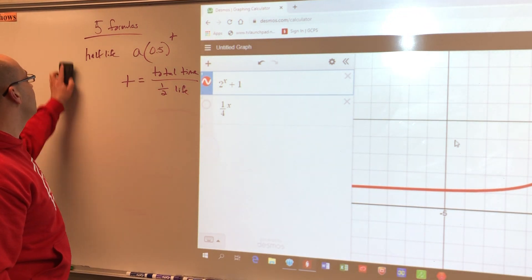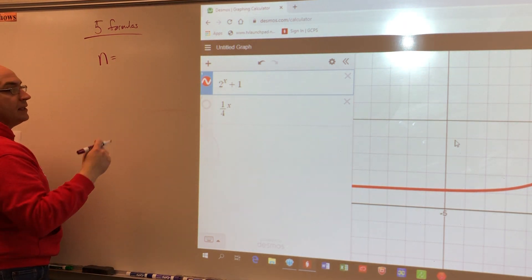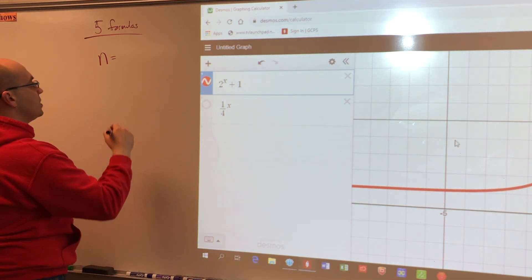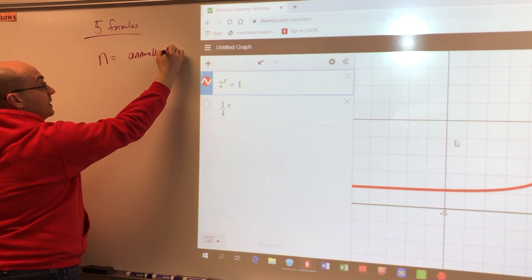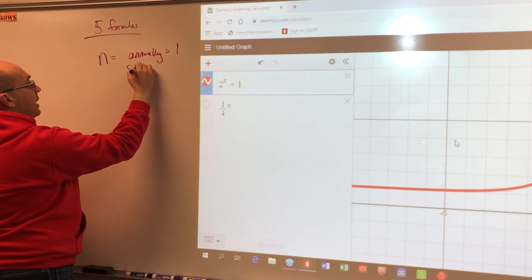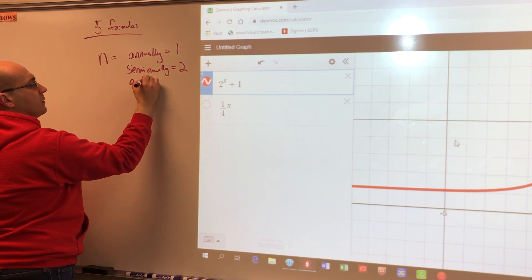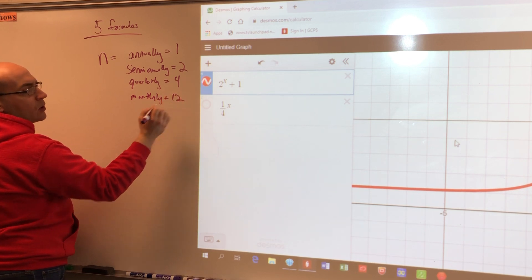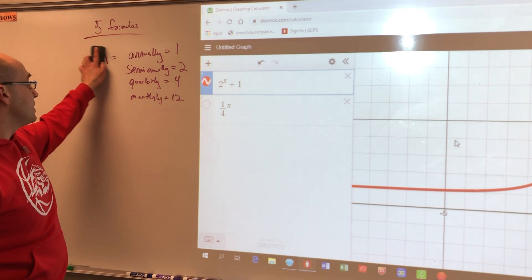Compound interest is pretty simple. The only thing we have to be careful of with compound interest is the N value. And N stands for how many times interest is compounded in one year. So the words you'll see are annually, which means one. Semi-annually, which means two. Quarterly, which means four. And then you're going to see monthly. You won't see anything else. And those are the typical ones for actual real-life banks. So these are the ones that you're going to see there. So that kind of wraps up the five formulas.